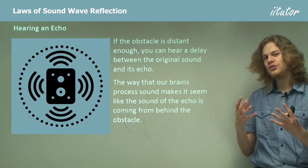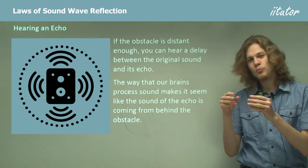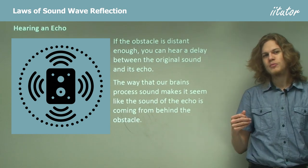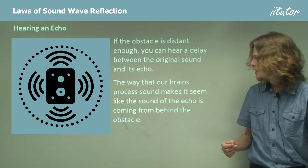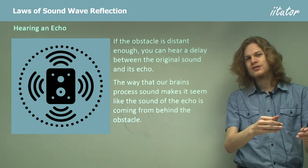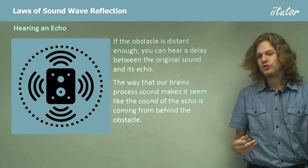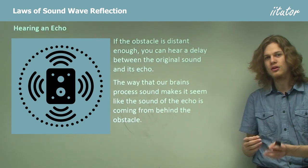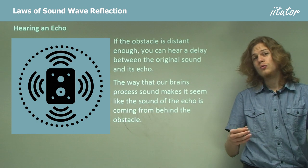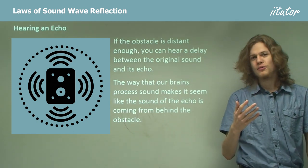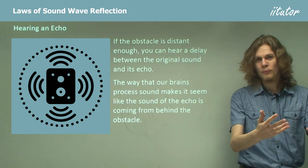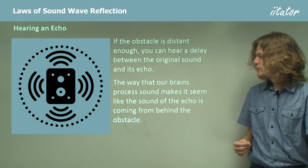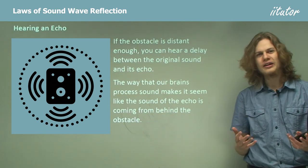Because our brain processes sound as if it always comes from a single point, it's possible to trick the brain into thinking there's a different sound coming from a further away point. The brain thinks the echo is the sound of a separate event. So if we echo a clap off a distant wall, the brain will hear the nearby clap first, then hear the echo of the clap reflected off the wall, and conclude there's another clapping sound coming from behind that wall.